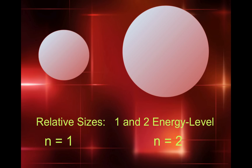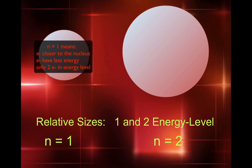This picture shows the relative sizes of the first and second energy levels. n equals 1 is a smaller electron cloud than n equals 2. n equals 1 is closer to the nucleus, has less energy, and can only hold 2 electrons.